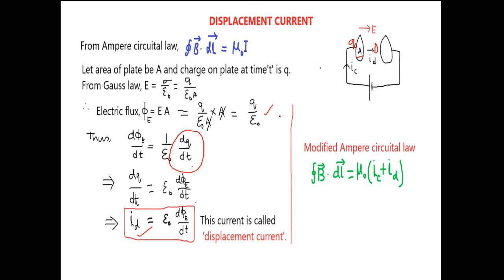So Maxwell modified Ampere circuital law as line integral B dot DL equal to mu naught IC plus ID. IC is the conduction current through the wire, and ID is displacement current produced due to varying electric flux. It is all about the displacement current.